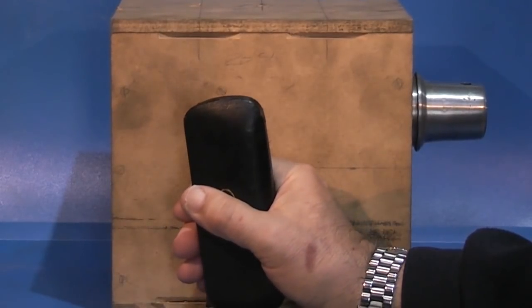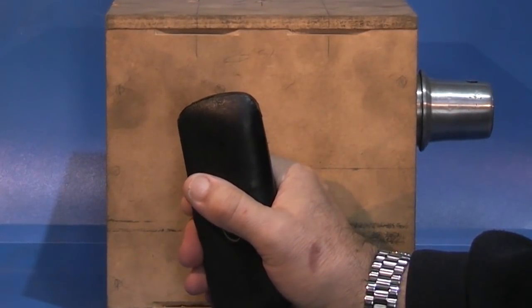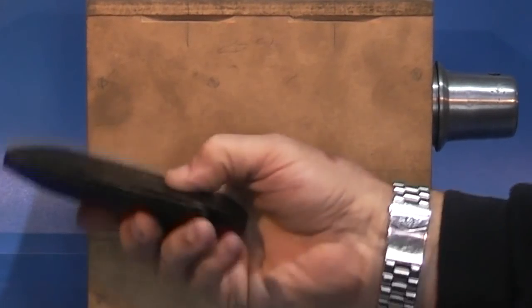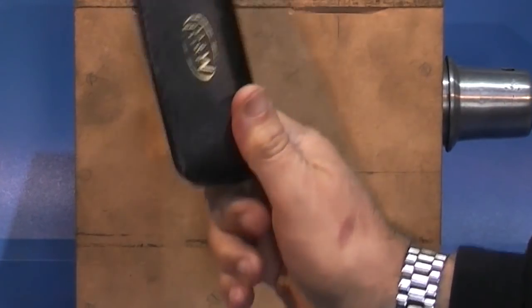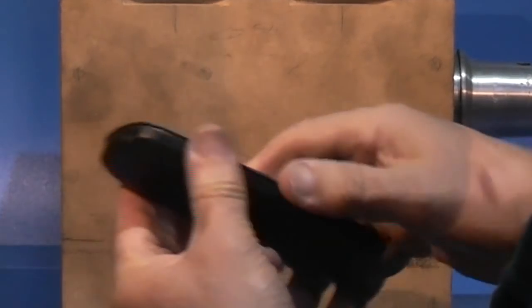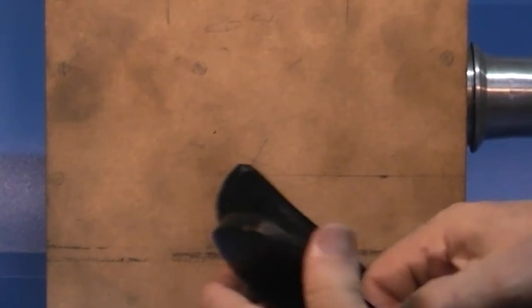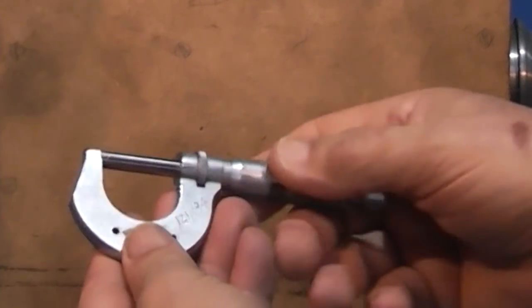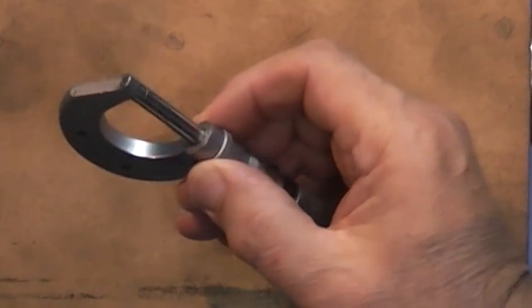Last week I went to the Doncaster Model Engineering Exhibition at the Doncaster Racecourse and I purchased this micrometer, one standard Maure and Wright metric, and that cost me five pounds.